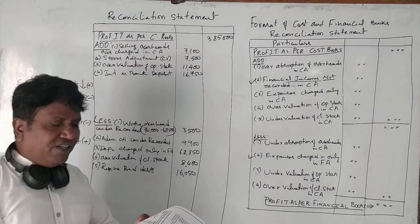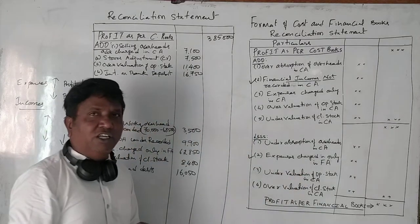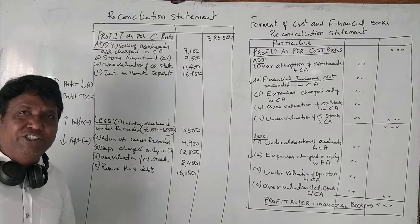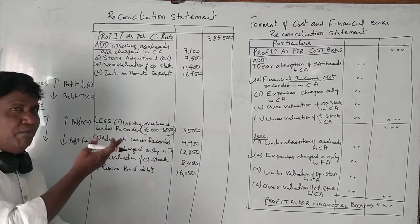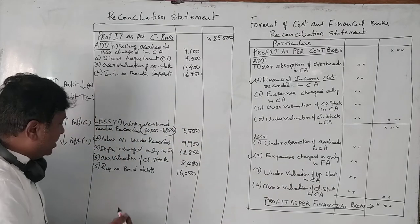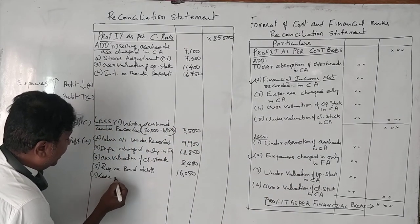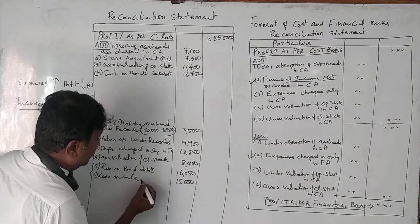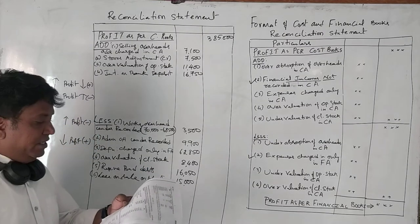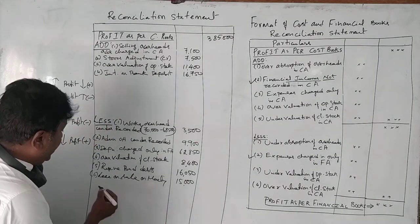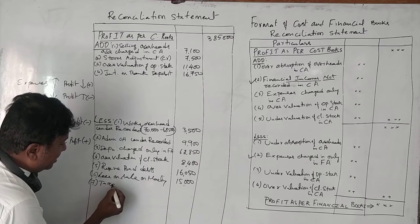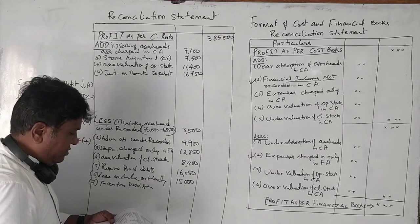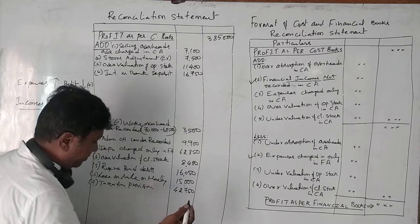Next is loss on sale of machinery. Any expenses charged only in financial accounting — such as losses on sale of machinery — will not be recorded in cost books. Loss on sale of machinery: 15,000 rupees to be deducted. Similarly, tax provision is also only in financial accounting: 42,000 rupees to be deducted.